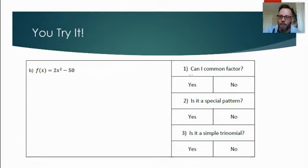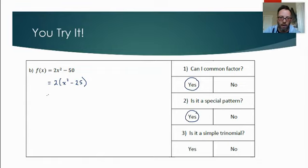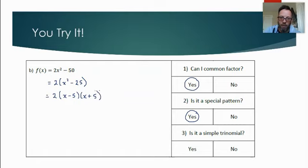For 2x-squared minus 50: first question — can I common factor? Yes, take out a 2, leaving (x-squared minus 25). Is what's left a special pattern? Yes — it's a difference of squares. So 2x-squared minus 50 factors as 2(x − 5)(x + 5). Just those two questions got us there.